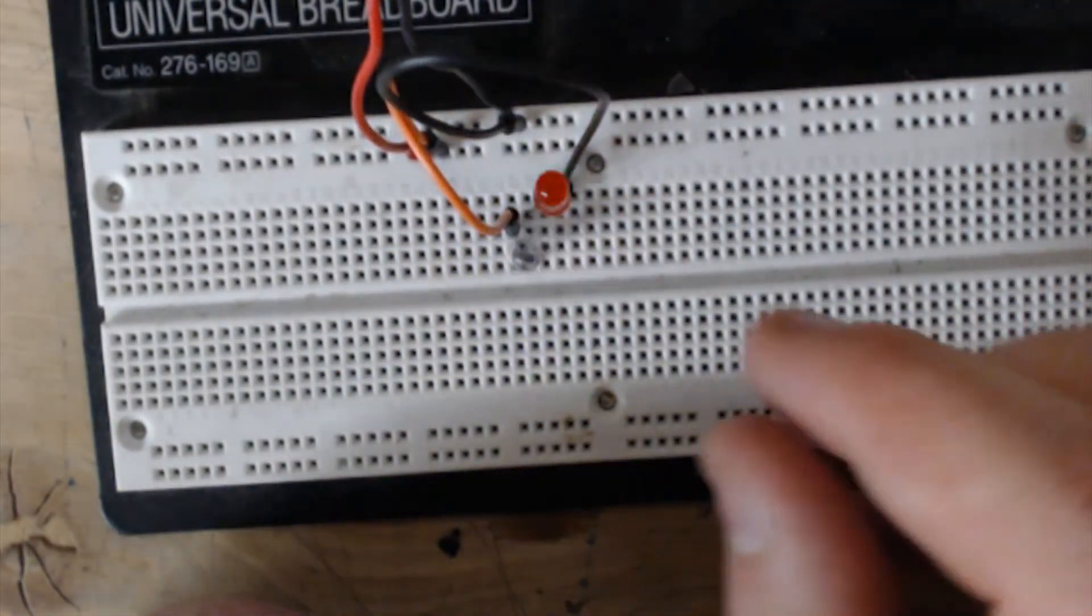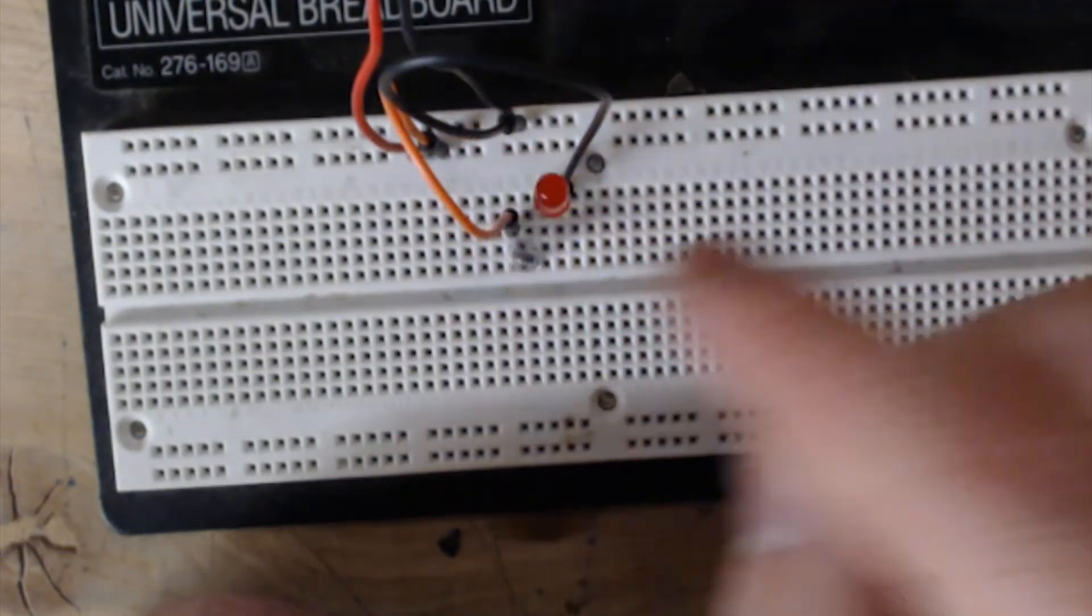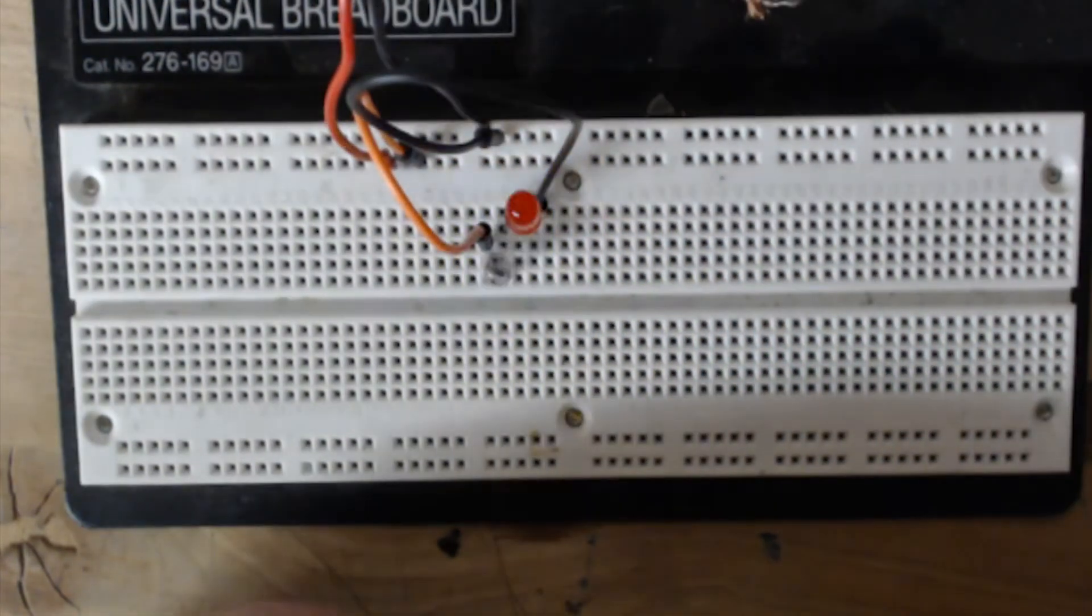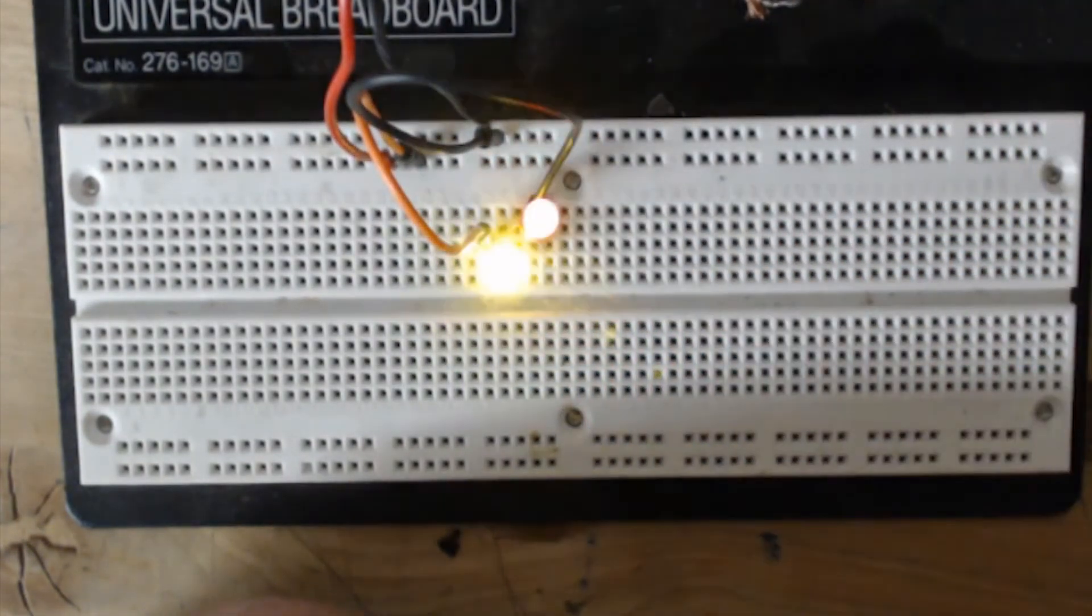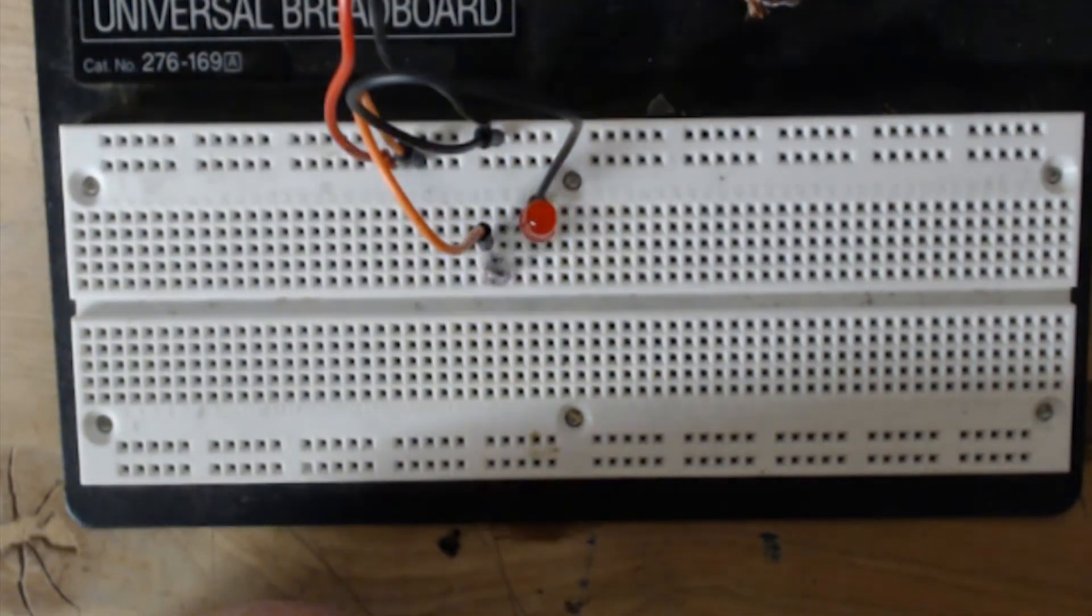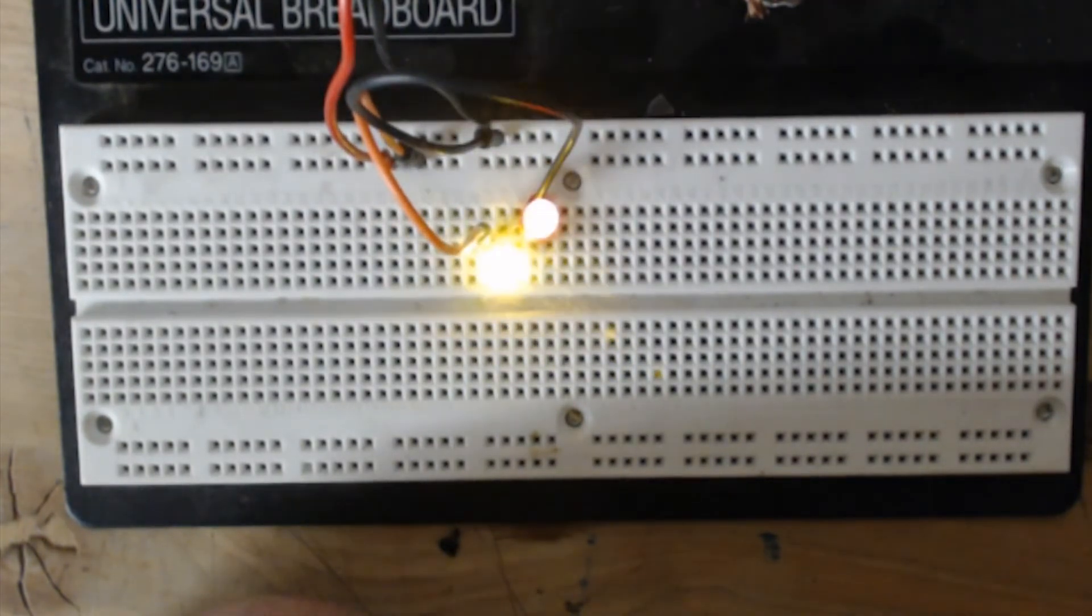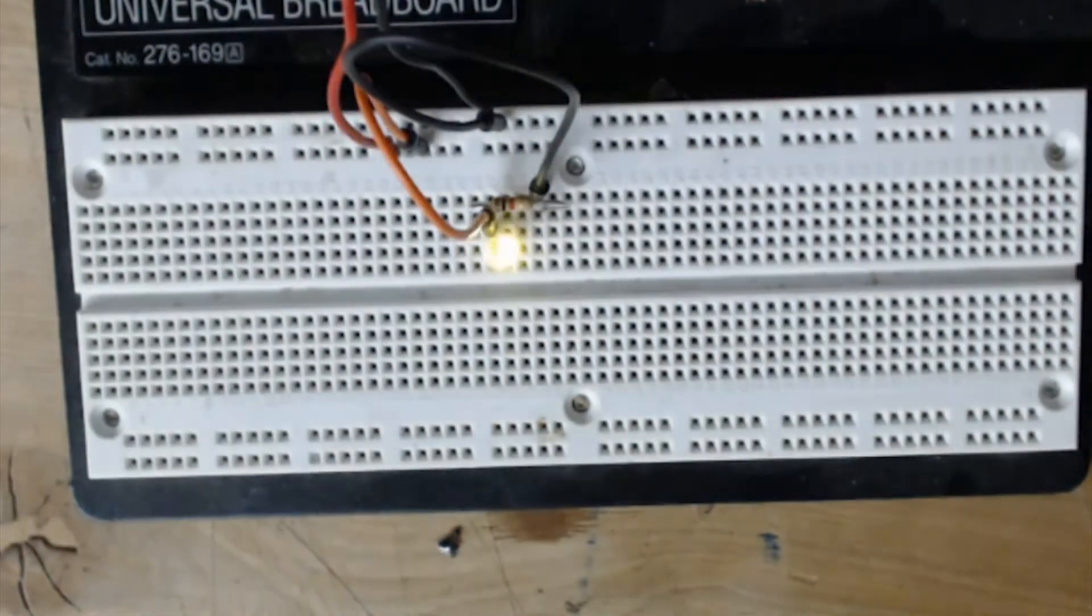Now what I've got powering this is a 4.2 volt lithium ion battery. You can use one of those. If you don't have another LED that you're powering with it, I would definitely recommend using a small resistor, just something real small, 1k ohm or less.